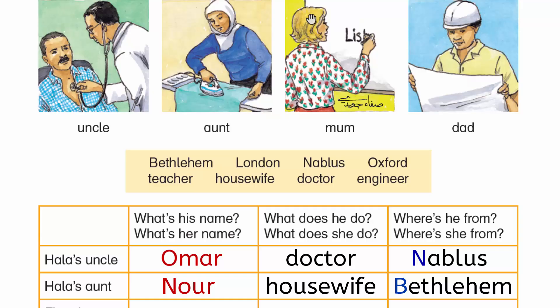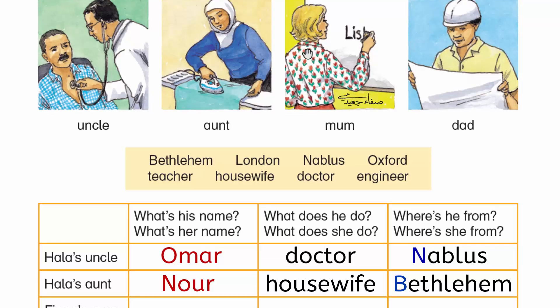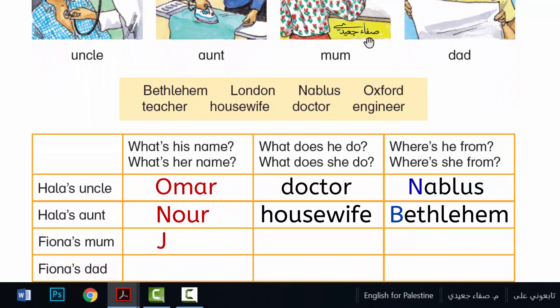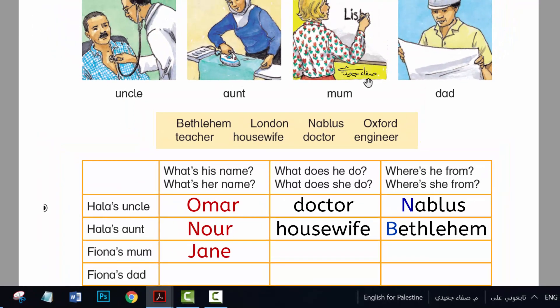Who's this, Fiona? This is my mum. What's her name? Jane. How do you spell that? J-A-N-E. What does she do? She's a teacher. Where's she from? Oxford.